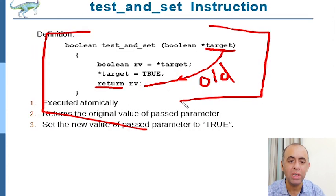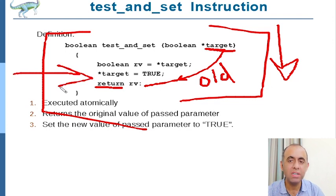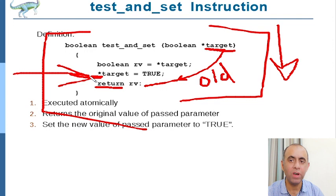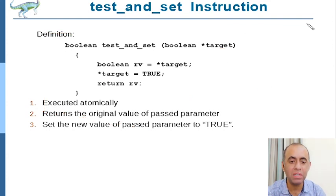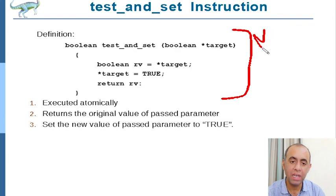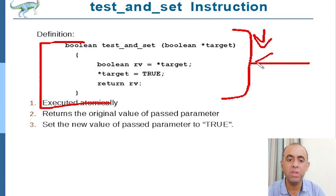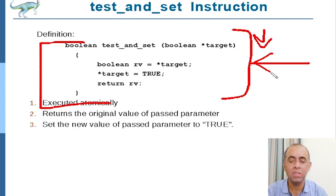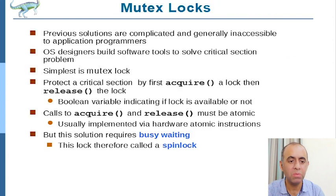This is the process of using an atomic instruction. By atomic, we mean that while this function is processing, there cannot be context switching in between. A race condition only occurs if the process is interrupted mid-execution and there is a context switch. This is prevented by implementing test-and-set as an atomic function — if one process has called it, no other process can enter its definition; it must wait for the first process to finish.